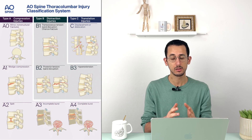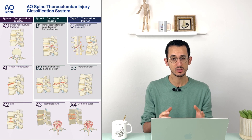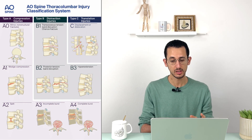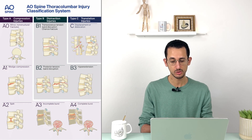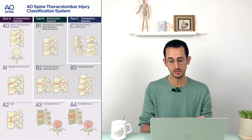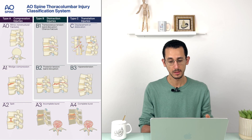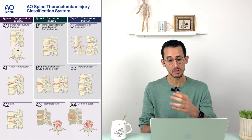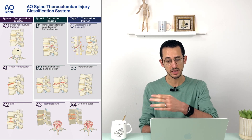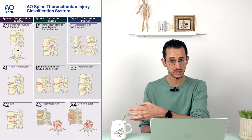The classification is divided into three groups: Type A fracture, Type B fracture, or Type C fracture. Type A fracture is classified into five types, Type B into three types, and Type C is just one type. The severity of injury is basically going to be more severe as we go from A to B to C.